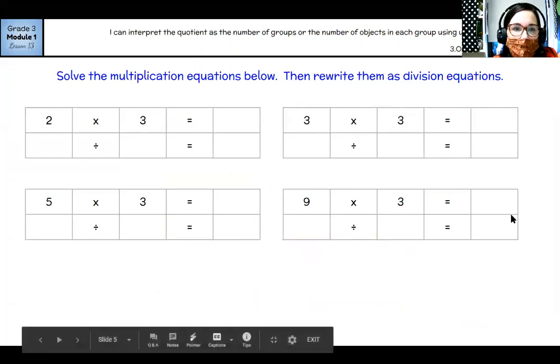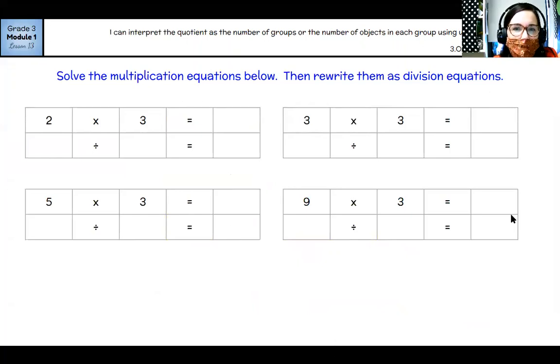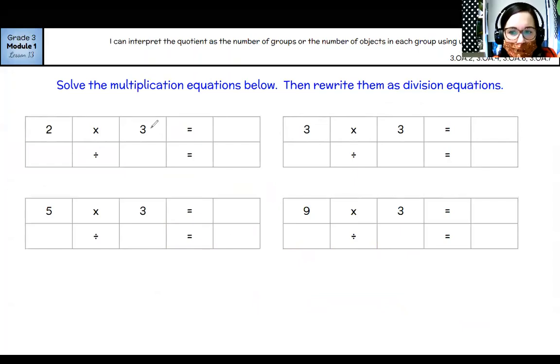All right, solve the multiplication equations below, then rewrite them as division equations. Okay, cool. So let's look at two times three. So I'm going to think that through: two, three times two, four, six. Okay, so if I want to rewrite that as division, remember, it's just flipped. So that would mean six divided by two equals three. I also could write six divided by three equals two.